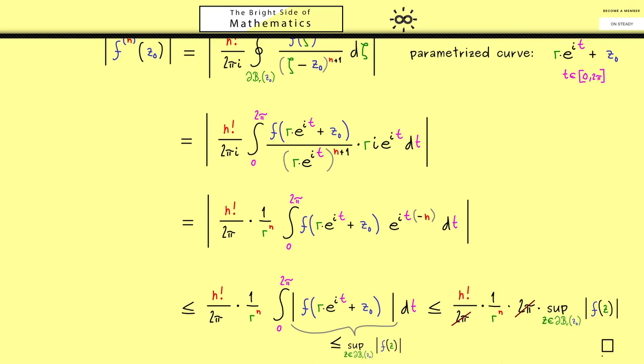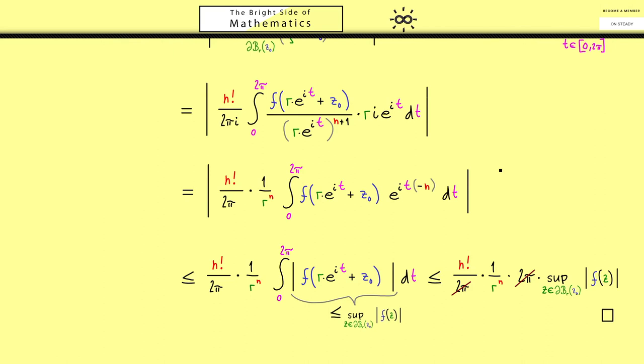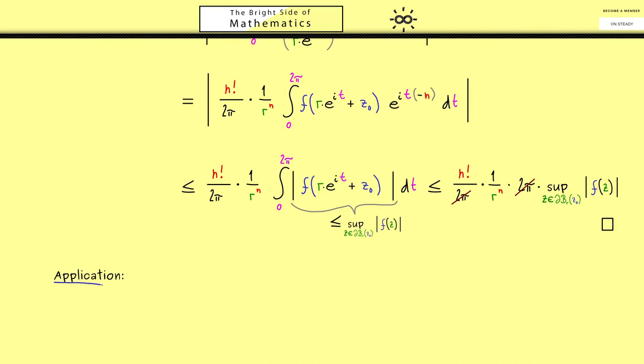Then I would say we are ready for an application of this estimate. As promised at the beginning we want to use it for so-called entire functions. There please recall these are simply holomorphic functions where the domain is the whole complex plane. However now we also assume that this entire function is a bounded one. This simply means that the supremum of the function in the absolute value is finite. So it is a well-defined non-negative number we can call c. So you see this here can be very helpful if we want to use the estimate from above.